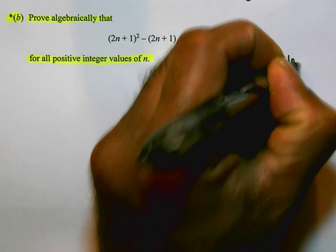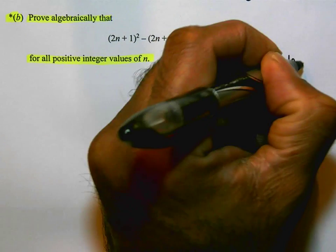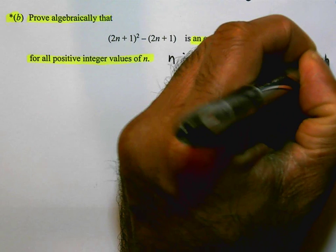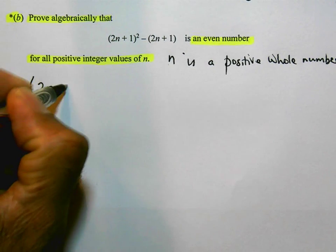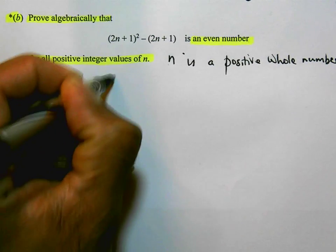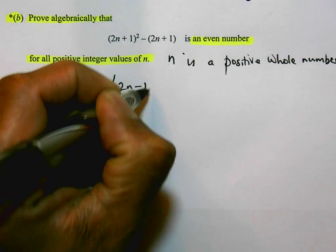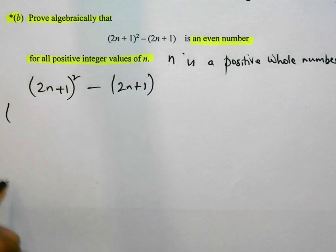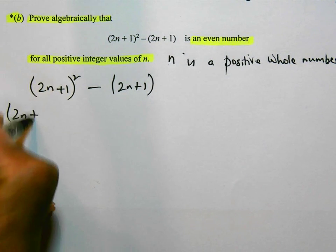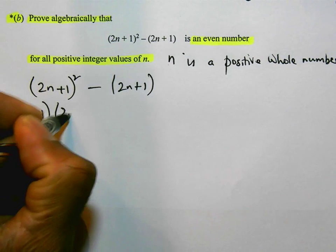So let's look at this expression: (2n+1)² minus (2n+1). So (2n+1)² and that's (2n+1) times (2n+1), and subtract (2n+1).